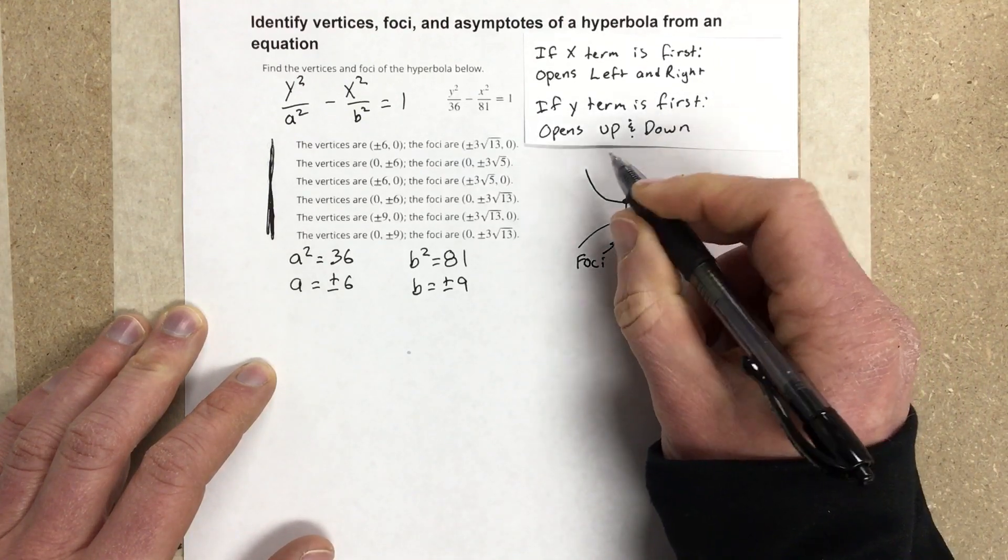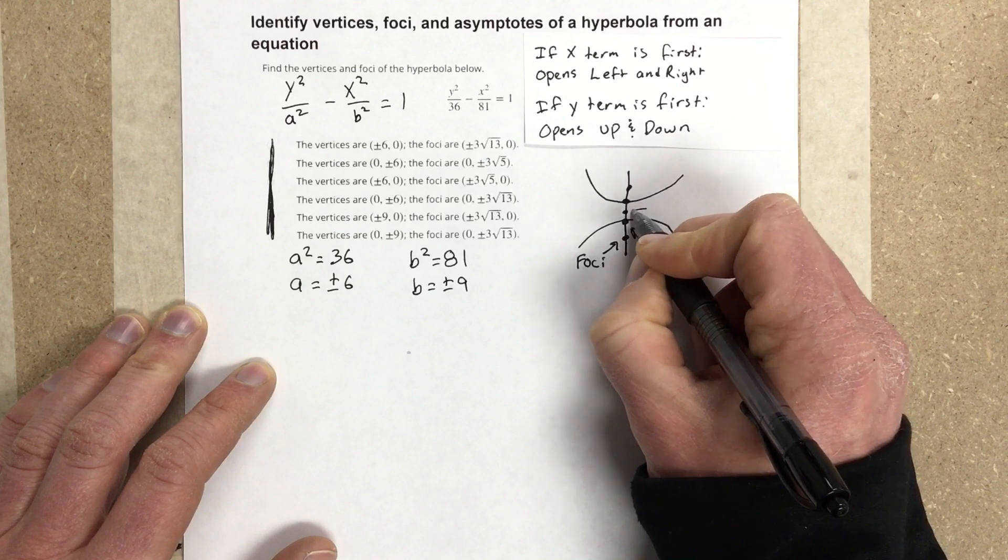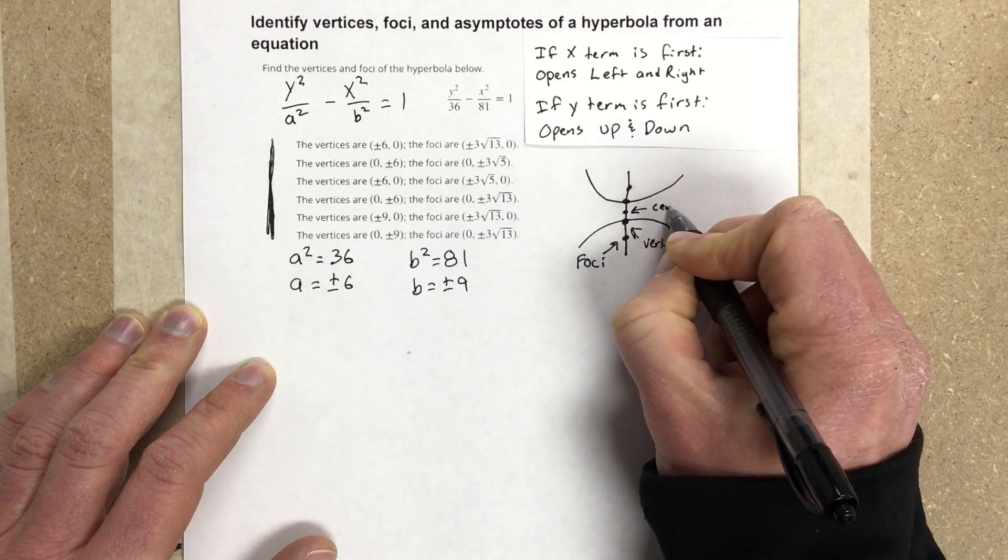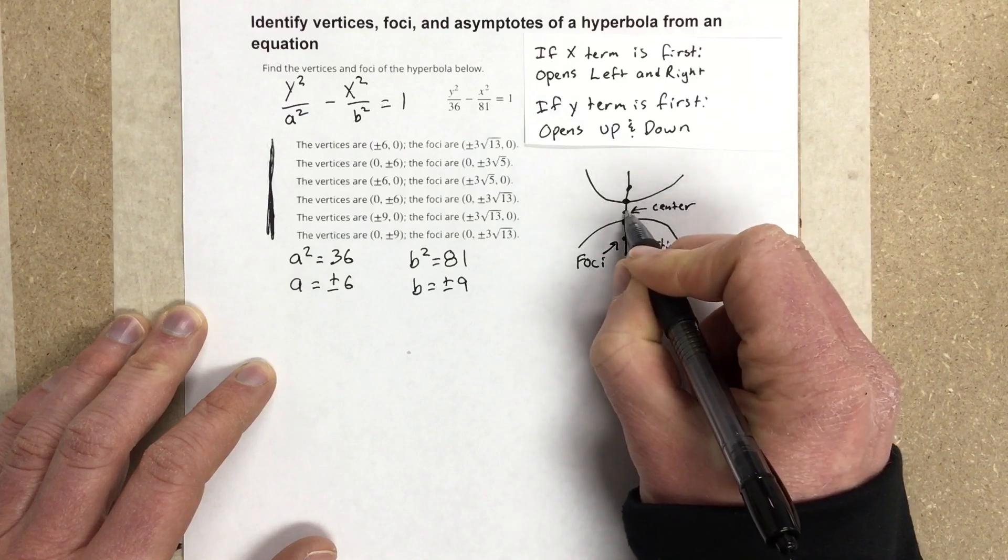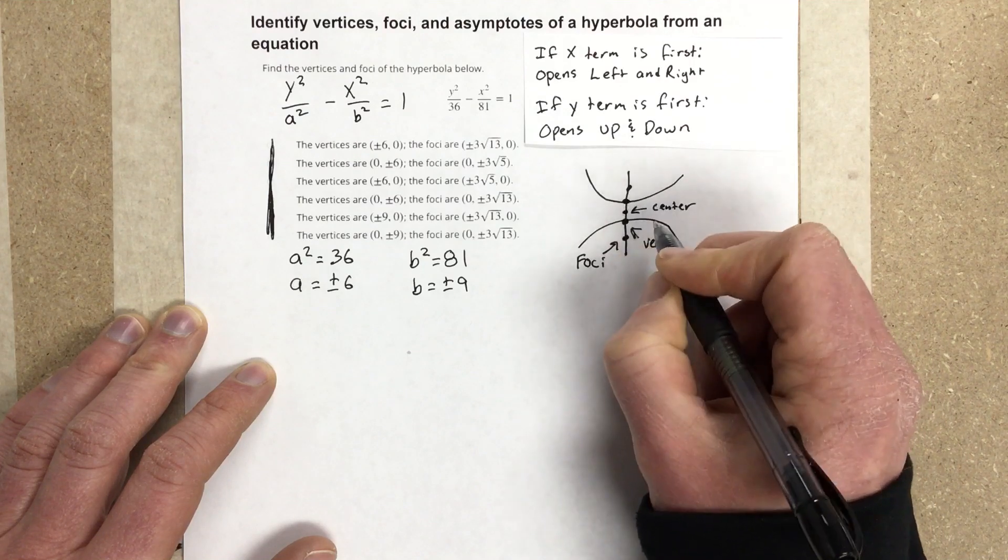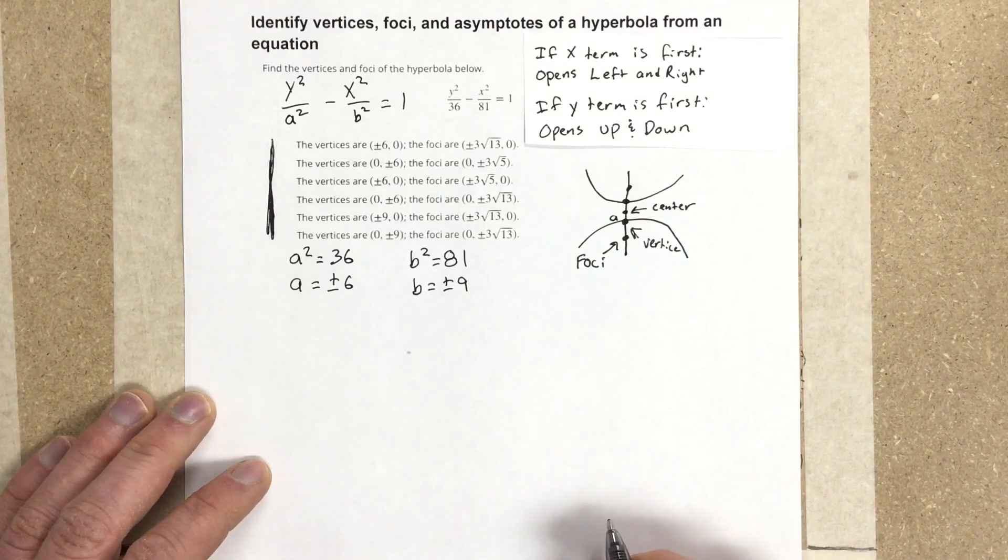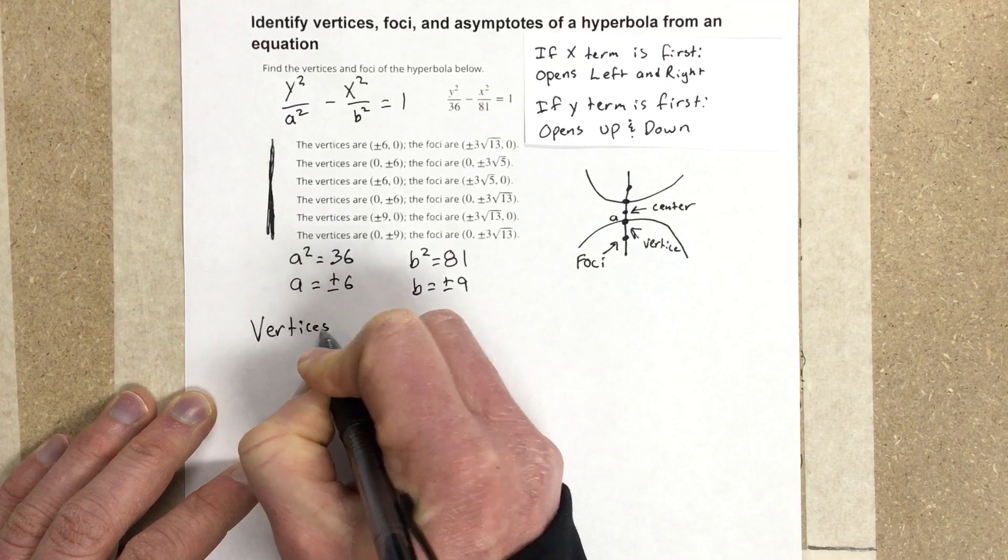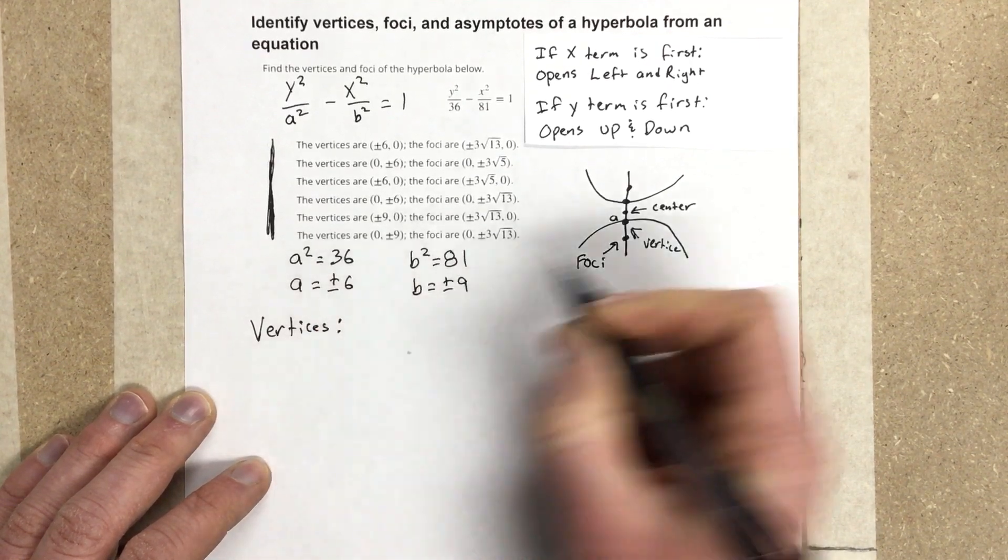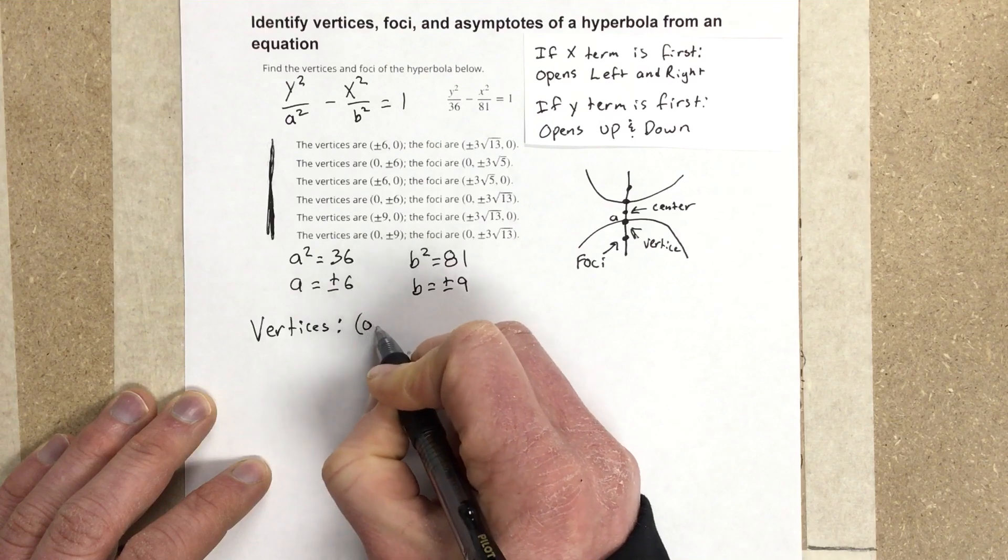Now, the distance between our center, which in this case is 0, 0, and our vertice, that distance is always a. So if we want to find our vertices, we're going to have the x values stay the same, so we're going to have 0 for the x value.